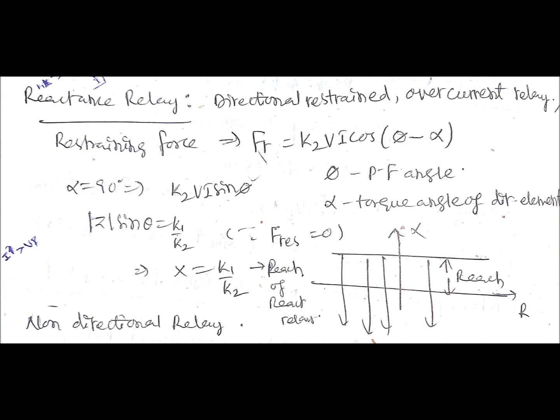In case of distance relays we also have the reactance relay — all are in ohm values, that is impedance values. Reactance is a part of impedance with only purely imaginary quantities and no resistance. This is a directional-restrained overcurrent relay, meaning a directional element gives the restraining force and current gives the operating force. The restraining force is FR = k2·V·I·cos(φ − α), where φ is the power factor angle of the load and α is the torque angle of the directional element.